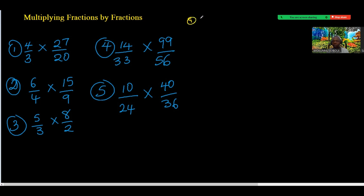The first one says 4 over 3 times 27 over 20. To do this we need to check the denominators and the numerators and see if there is any factor that can divide a number above and also divide a number below. 4 can divide 20, so I put 1 here and 4 into 20 is 5.